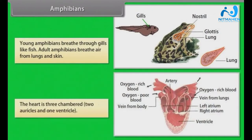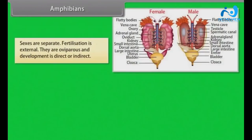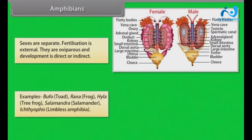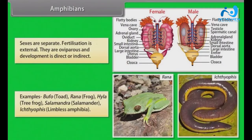Adult amphibians breathe air from lungs and skin. The heart is three-chambered: two auricles and one ventricle. Sexes are separate. Fertilization is external. They are oviparous and development is direct or indirect. Examples: Bufo (Toad), Rana (Frog), Hyla (Tree Frog), Salamandra (Salamander), Ichthyophis (Limbless Amphibia).